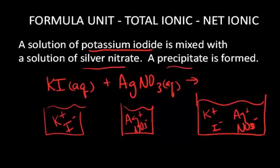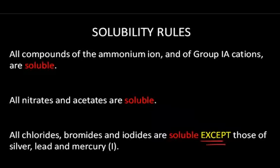So we need to take a look at the solubility rules to make that determination. The solubility rules say that all compounds of the Group 1A cations are soluble. So it doesn't matter what the potassium ion comes near, the iodide or the nitrate, it's still going to be soluble.